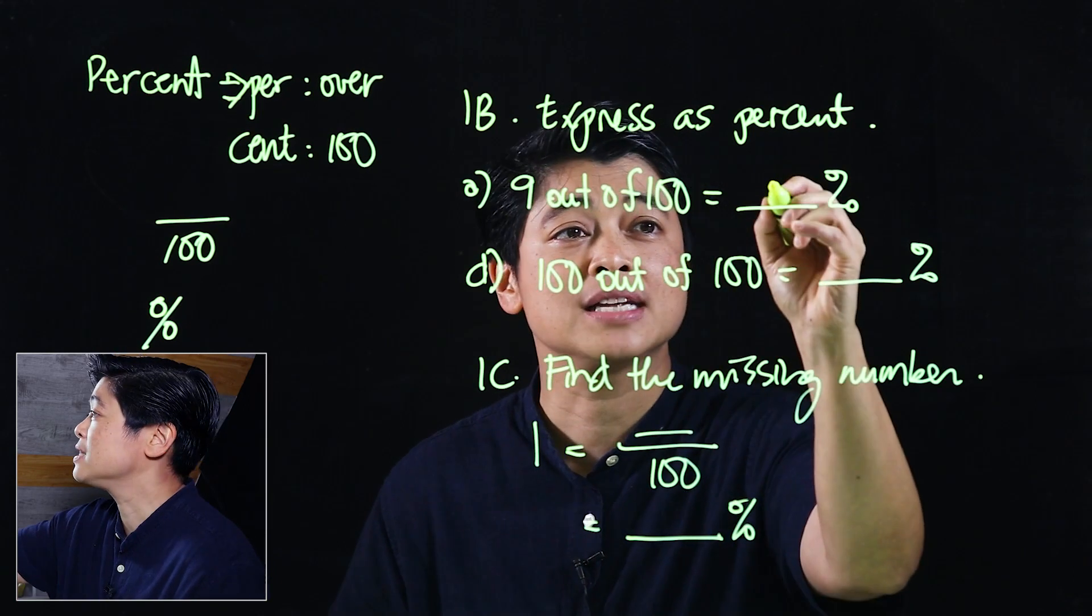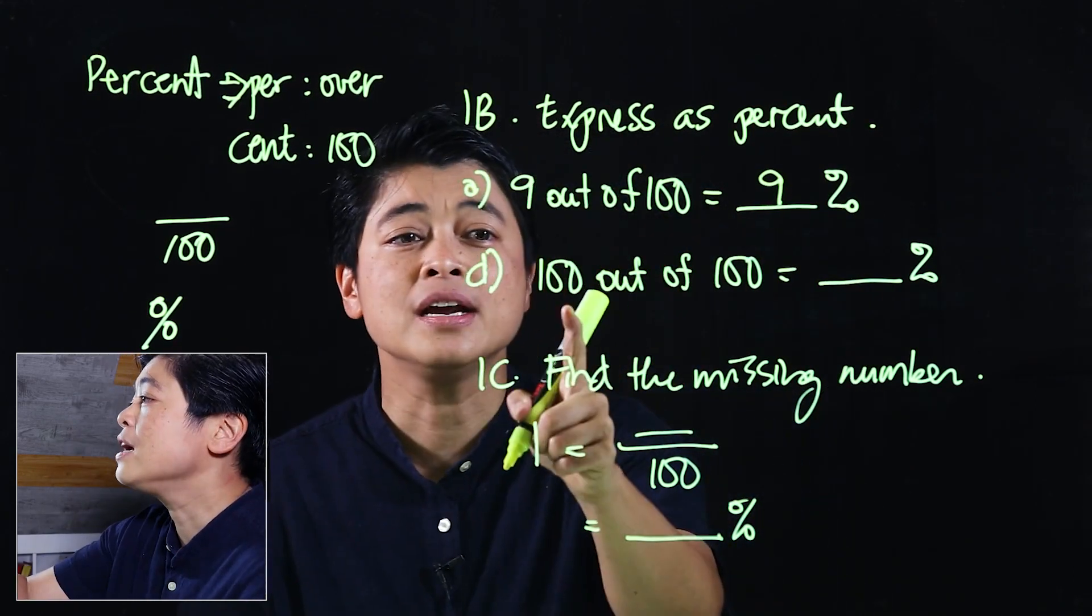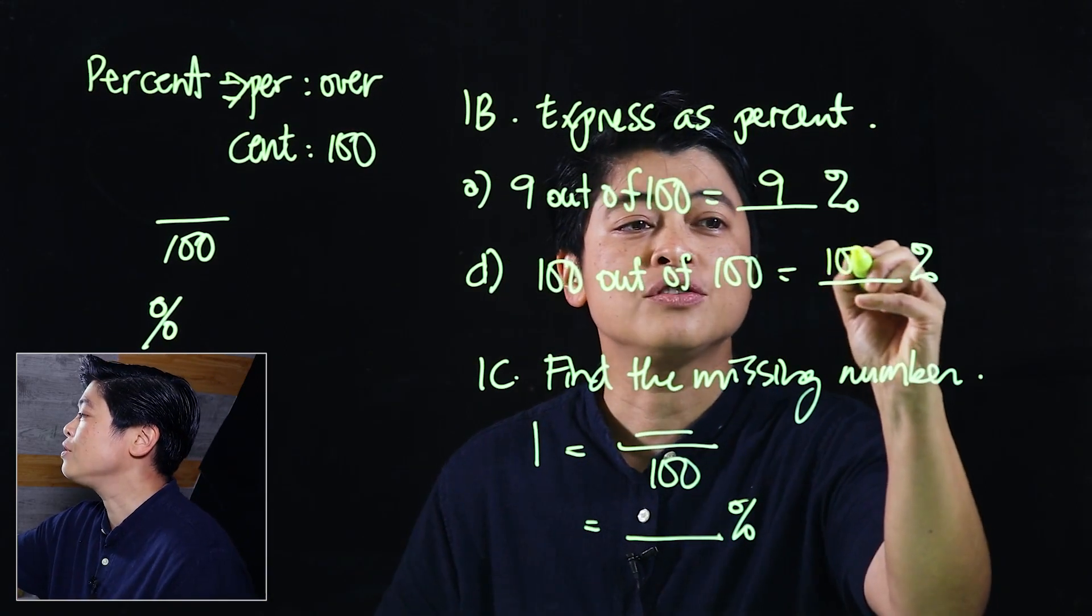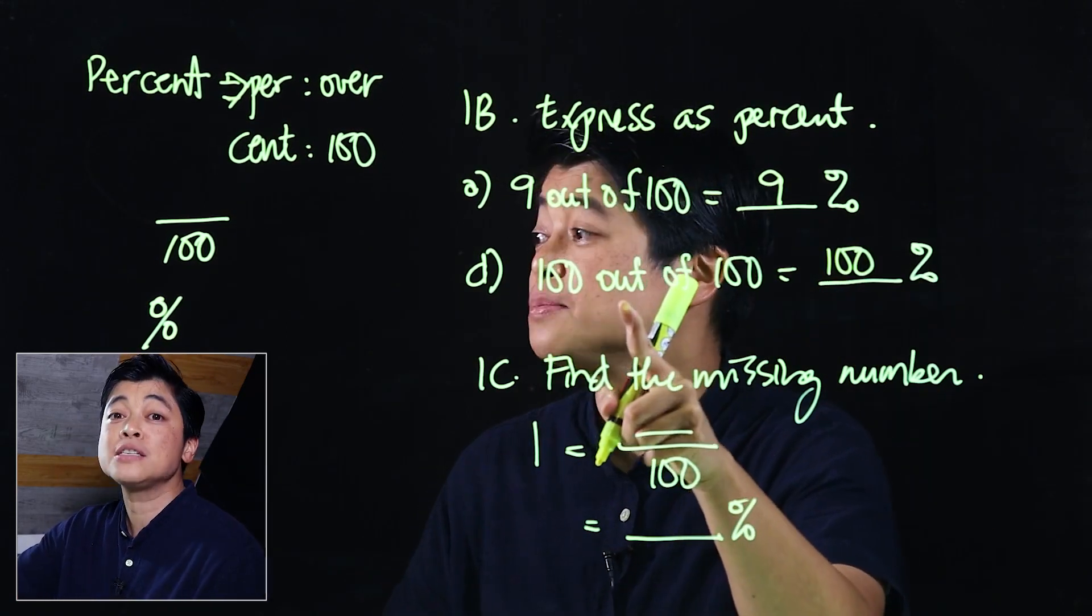100 out of 100 means 100%, because 100 out of is per, 100 is cent, so 100%.